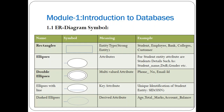The next symbol is a dashed ellipse, called a derived attribute. A derived attribute derives its value from one or more other attributes of the same entity type. For example, age can be calculated as system date minus date of birth. Similarly, total marks can be derived from subject1 marks plus subject2 marks plus subject3 marks — making total marks a derived attribute.